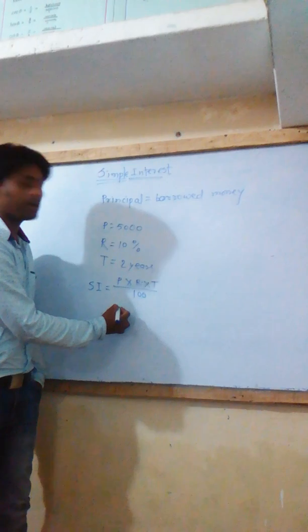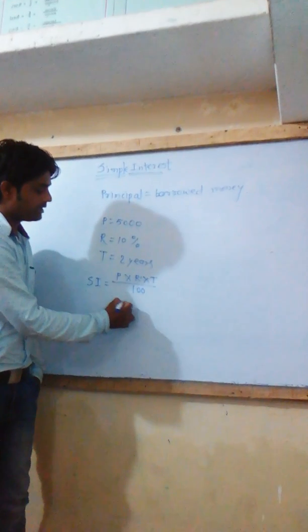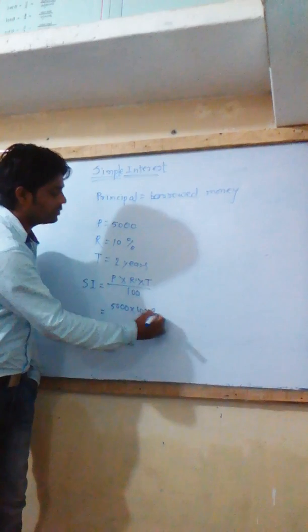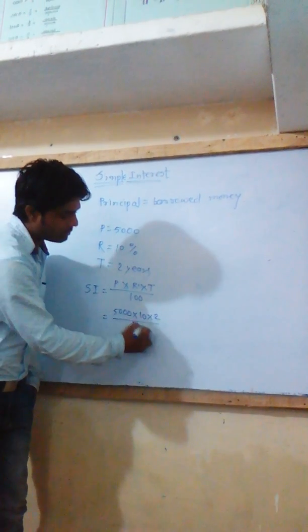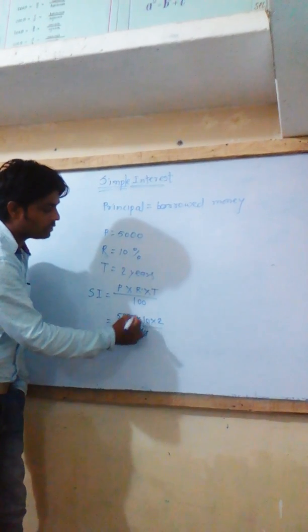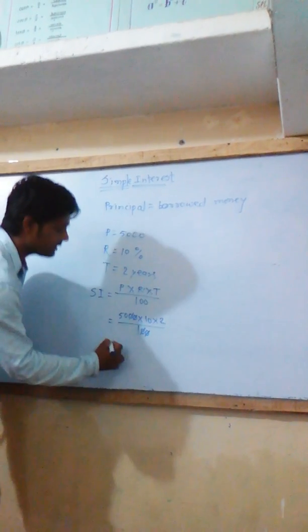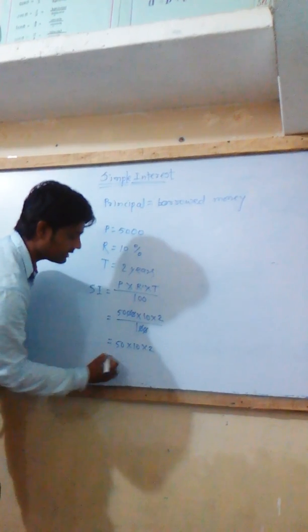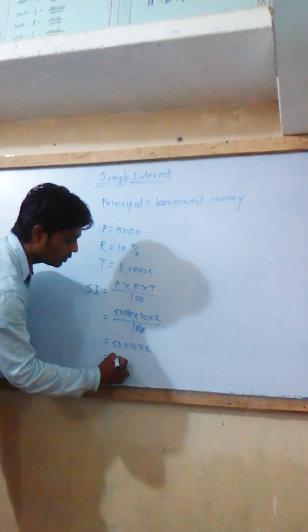Now I put these values at their respective places. 5,000 multiplied by 10 multiplied by 2 upon 100. Now these two zeros will cancel, and what remains is 50 multiplied by 10 multiplied by 2. That is 500 multiplied by 2, which equals 1,000.